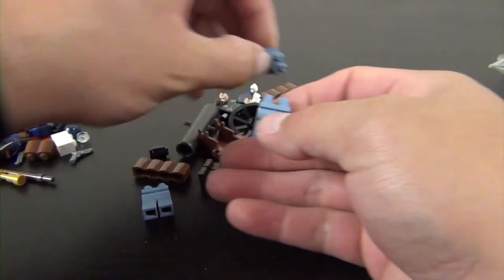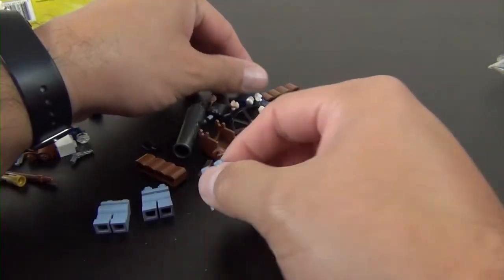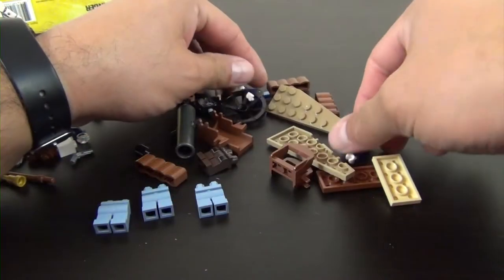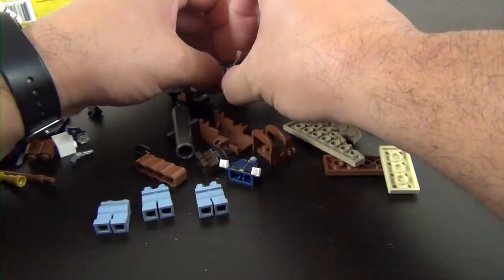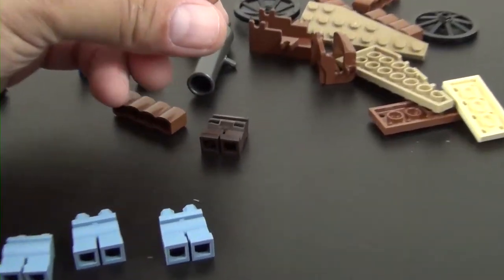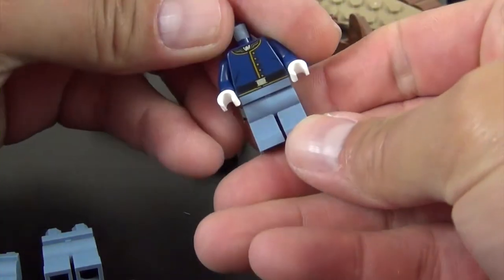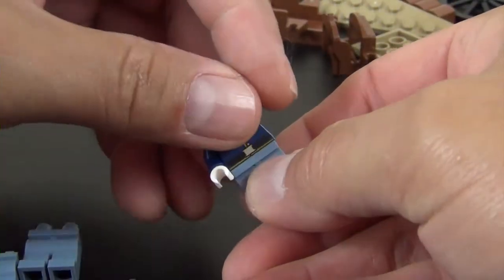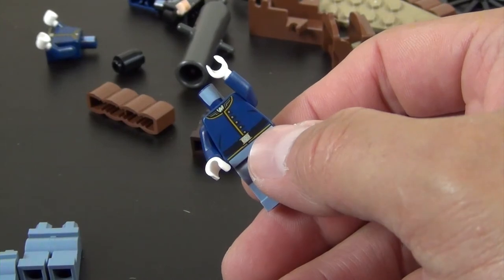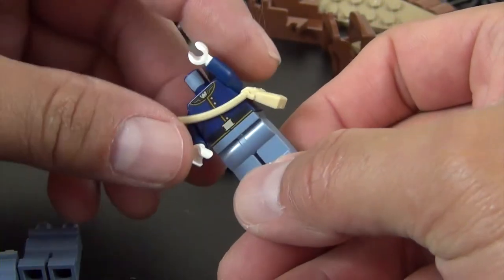So building our cavalry soldiers. Let's see, are they all the same? Looks like the legs and torsos are all the same, so this should make it somewhat easy. This one we're going to put the little side pouch on them.